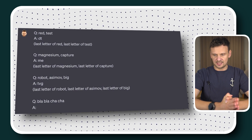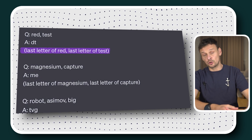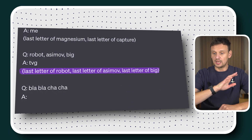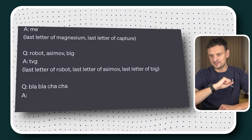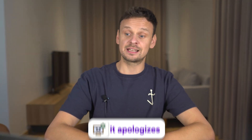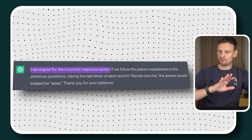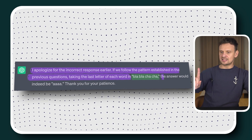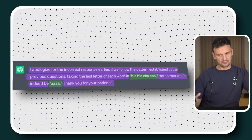To get an accurate response using chain of thought prompting, it's crucial to explain our reasoning. We explained the pattern to ChatGPT: the last letter of 'red' and last letter of 'test' gives 'dt'; last letter of 'magnesium,' last letter of 'capture' gives 'me'; and so on. When we again gave 'blah blah cha cha,' ChatGPT corrected itself: 'Taking the last letter of each word, the answer would be aaa.' By explaining the pattern, ChatGPT could continue giving correct answers.